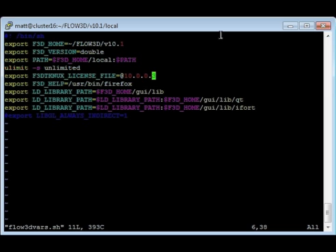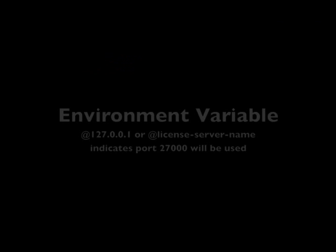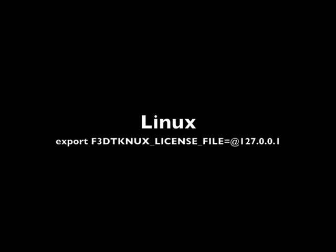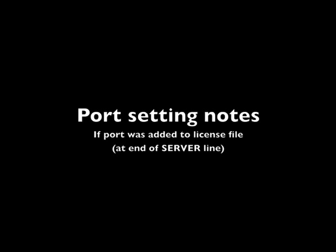In either case, the licensing variable is named F3DTKNUX_LICENSE_FILE. When using the default port, a server name or IP address preceded by the at symbol is used. Here is an example for Windows, and here is an example for Linux. When using a different port, the port must be specified before the at symbol — this will be the same port that you used in your license file. Here is an example for Windows, and here is an example for Linux.